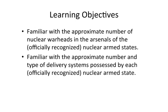So in this segment, we looked at the five official nuclear-armed states according to the Non-Proliferation Treaty. You should now be familiar with the approximate number of nuclear warheads in these states and the approximate number and type of delivery systems possessed by each of these states.